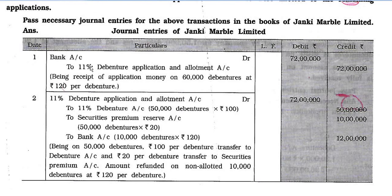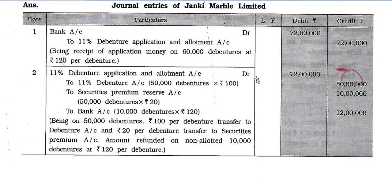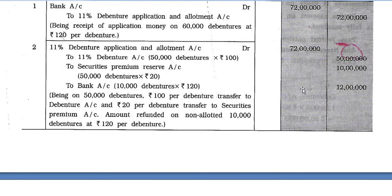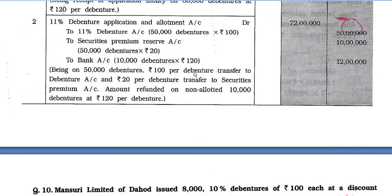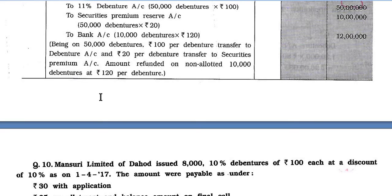Journal entries of Janaki Marble Limited. Entry 1: Bank account debit Rs. 72,00,000 to 11% Debenture Application and Allotment account Rs. 72,00,000 — being receipt of application money on 60,000 debentures at Rs. 120 per debenture. Entry 2: 11% Debenture Application and Allotment account — transfer to 50,000 debentures at Rs. 100 per debenture to debenture account, Rs. 20 per debenture to Security Premium account, and refund of 10,000 rejected debentures at Rs. 120 per debenture to bank. This concludes up to Question No. 9. Thank you very much.